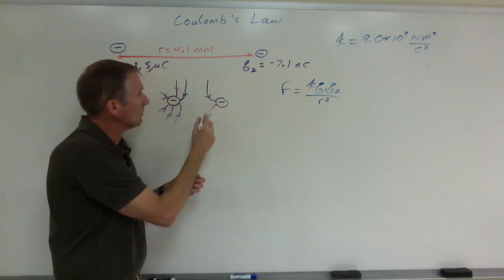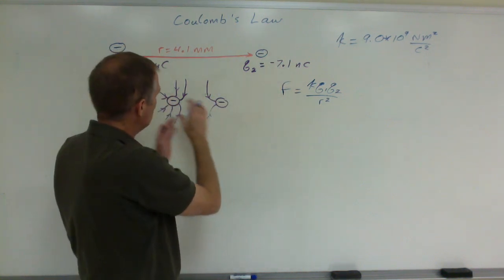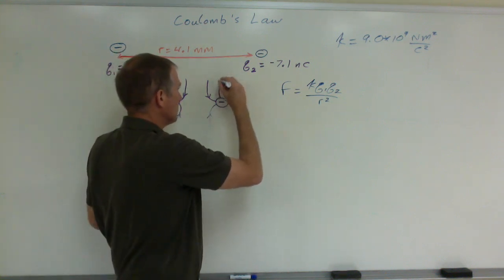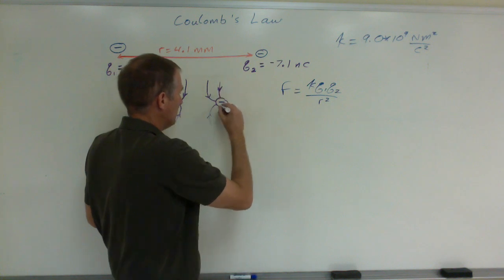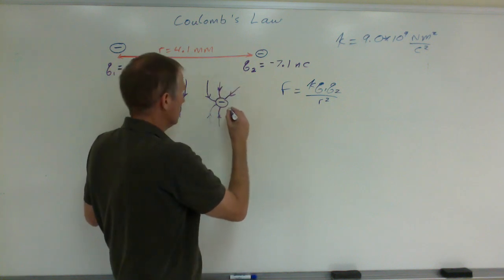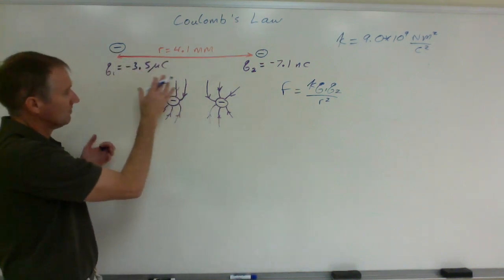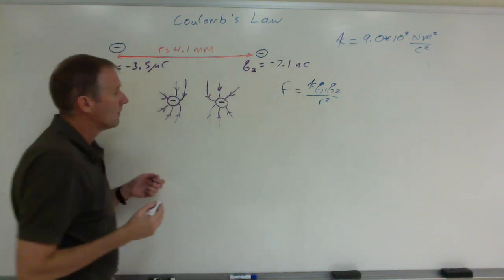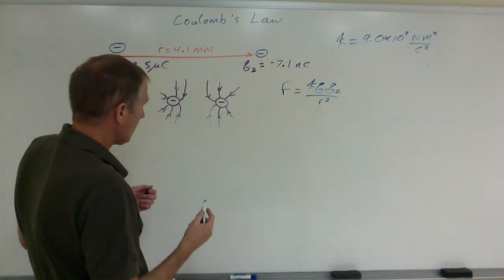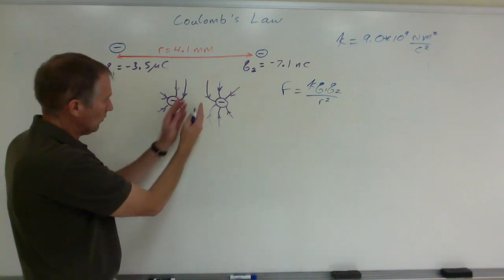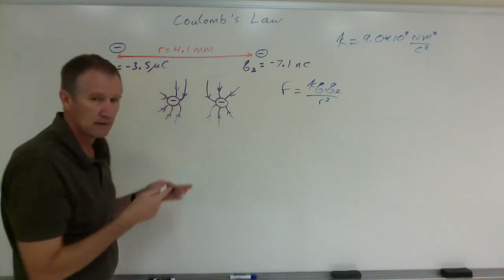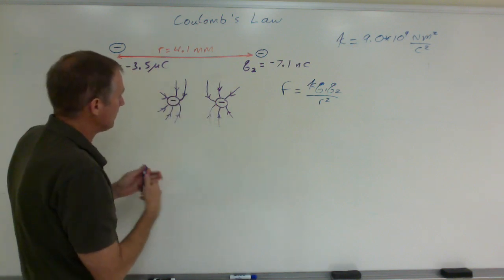It would look something like that. It would actually be a lot fewer lines over here because this is a much weaker charge. I don't really want to get into that so much, but this is a much stronger effect—this is a thousand times stronger. Micro is a thousand times bigger than nano. But all the same, my point is that they repel each other.